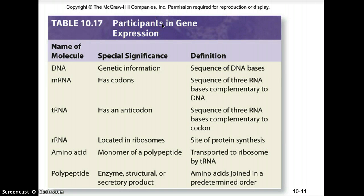Participants in gene expression include: DNA, which contains the genetic information; messenger RNA, which has the codons; tRNAs, which have the anticodons; ribosomal RNA located in ribosomes for cytoplasmic protein synthesis; the amino acid, which is a monomer of a polypeptide; and the polypeptide itself, which could be an enzyme, structural, or secretory protein. Amino acids are joined in a predetermined order based upon the sequence of nucleotides in the DNA of that gene.